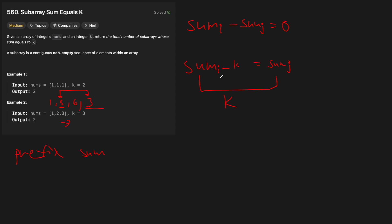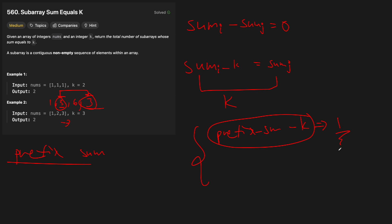So what we can do is store a map of all our prefix sums and count how many times each occurs. If we ever see a prefix sum where prefix_sum minus K has been seen before, then the elements between that earlier point and now sum to K. We store prefix_sum minus K as the key, and how many times we've seen it as the value. Every time we see a matching entry, we add that count to our solution.